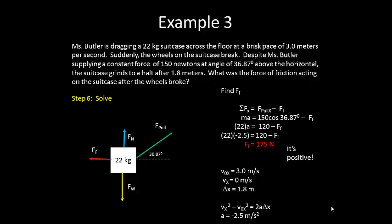Note that this is positive because I have already, by saying F pull x minus F sub f, specified that to be in the negative direction so that when we solve for it we get a positive value. And if correctly rounded, that should round to 180 newtons.